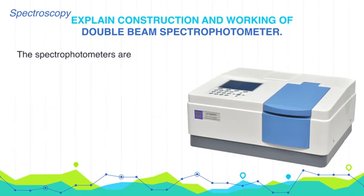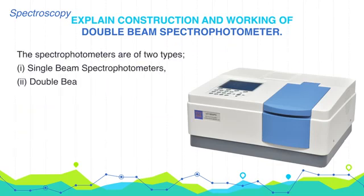The spectrophotometers are of two types: single beam spectrophotometer and double beam spectrophotometer.